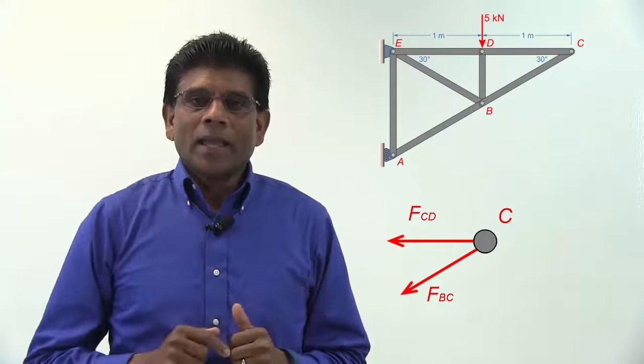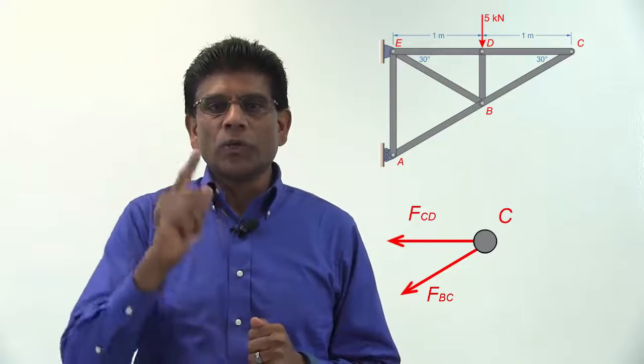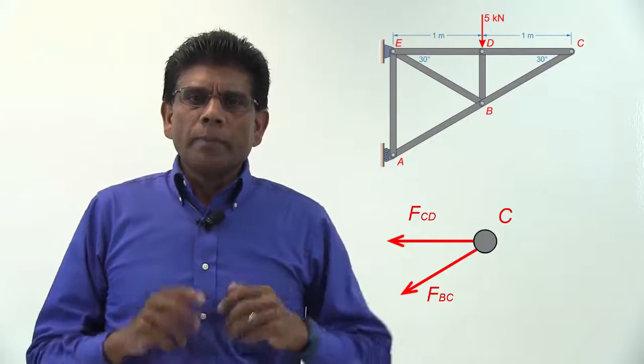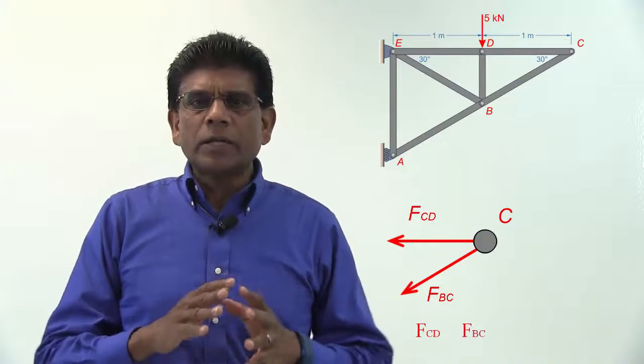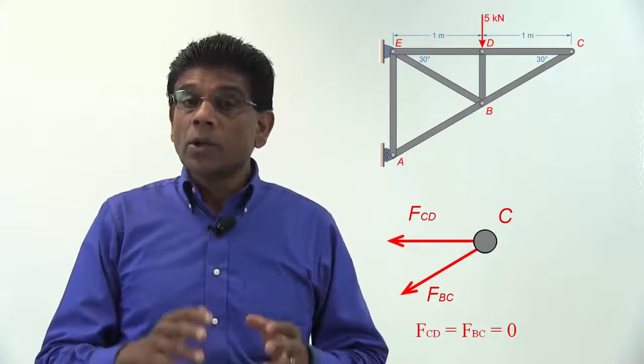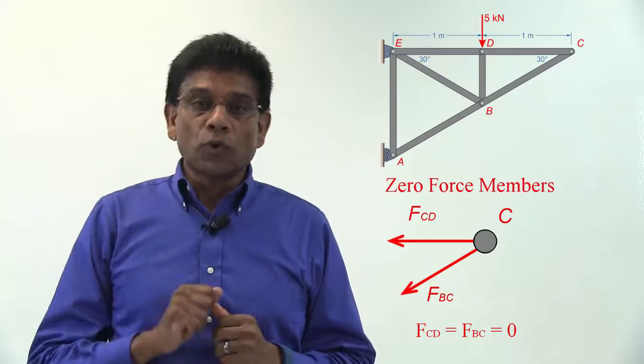Okay, I assume you have solved the problem. You can now continue with the video to verify your answers. Your analysis should show that members CD and BC do not carry any load at all. These members are not in tension or compression. Such members are called zero-force members.